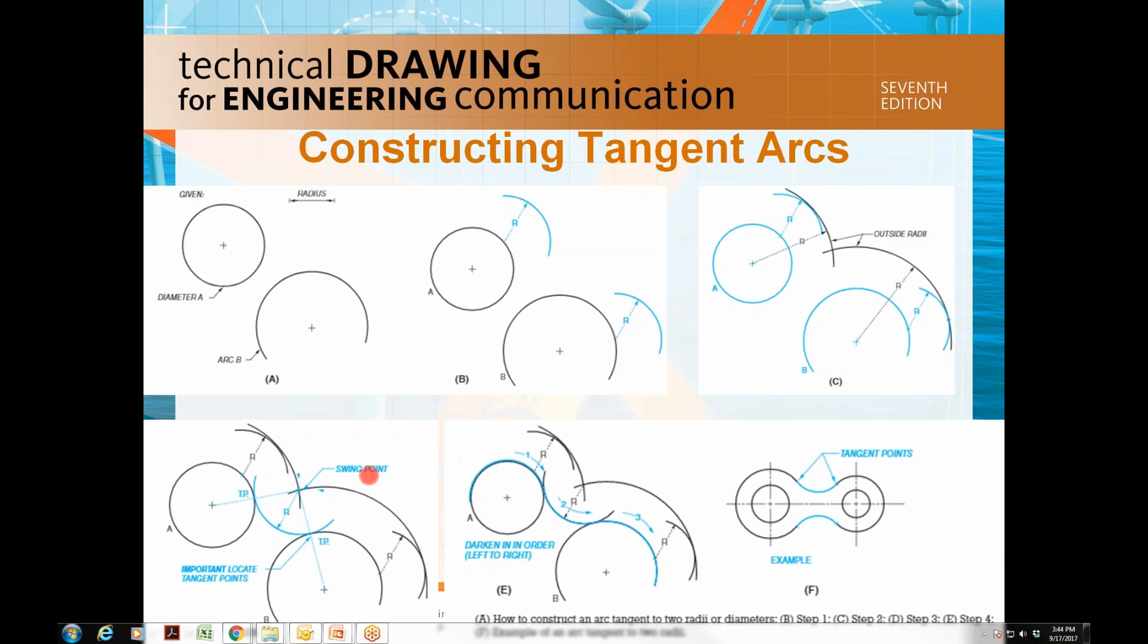Now you created one swing point here and then swing another arc that is the same radius as the given radius. Then you swing it at the tangent point here and tangent point at the arc B.